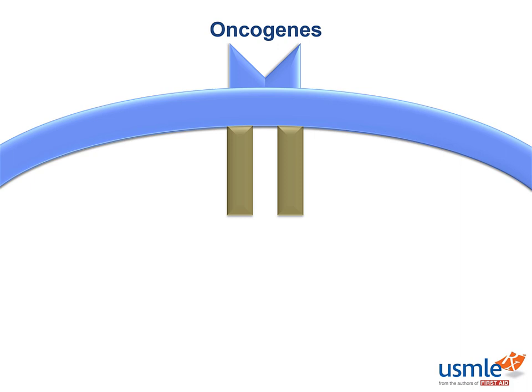DNA mutations can progress into full-blown cancers either by increasing proliferation or decreasing suppression. Think of it this way — you're driving a car. You could either step harder on the gas and make it go faster, or just let go of the brake. Both will lead to the car moving faster, and this is how DNA mutations on a molecular level lead to cancer.